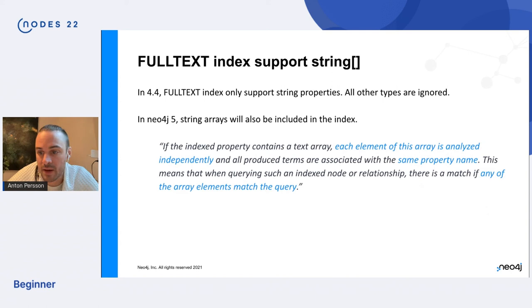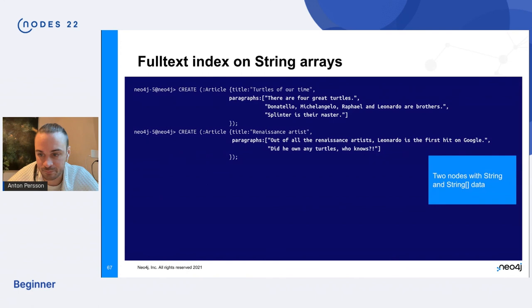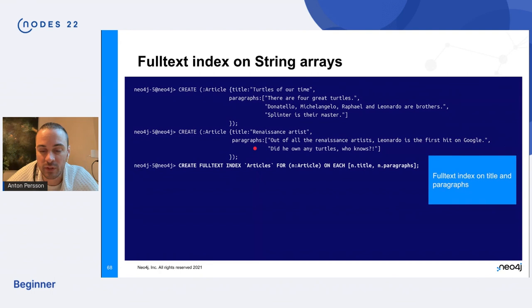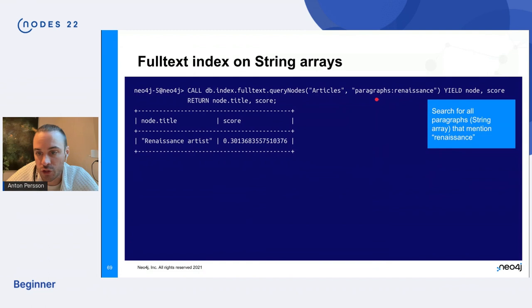And this is important when you use the property key value in your search query. So this means that when acquiring such an index node or relationship, there is a match if any of the array elements match the query. So here we have some data. We have the paragraphs value here. There's an article about turtles and this is an article about Renaissance artists and they have the paragraph property. We have a full text index on those properties and we can search for this paragraph property and we'll get some results.